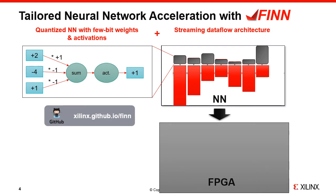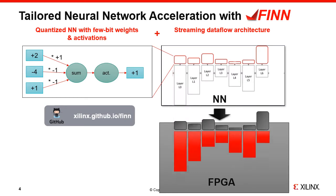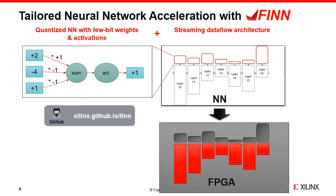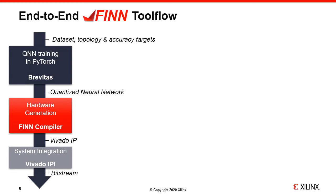In order to implement our traffic classifier, we'll be using FINN. FINN is an experimental framework from Xilinx Research Labs to explore deep neural network inference on FPGAs. It combines quantized neural networks with few-bit arithmetic and dataflow-style architectures customized for each network to generate high-throughput, low-latency FPGA accelerators that perform inference in a streaming fashion. The framework is fully open source to enable a high degree of flexibility. FINN provides an end-to-end tool flow to train and deploy neural networks, and we'll go through the key steps of the flow in this demo.